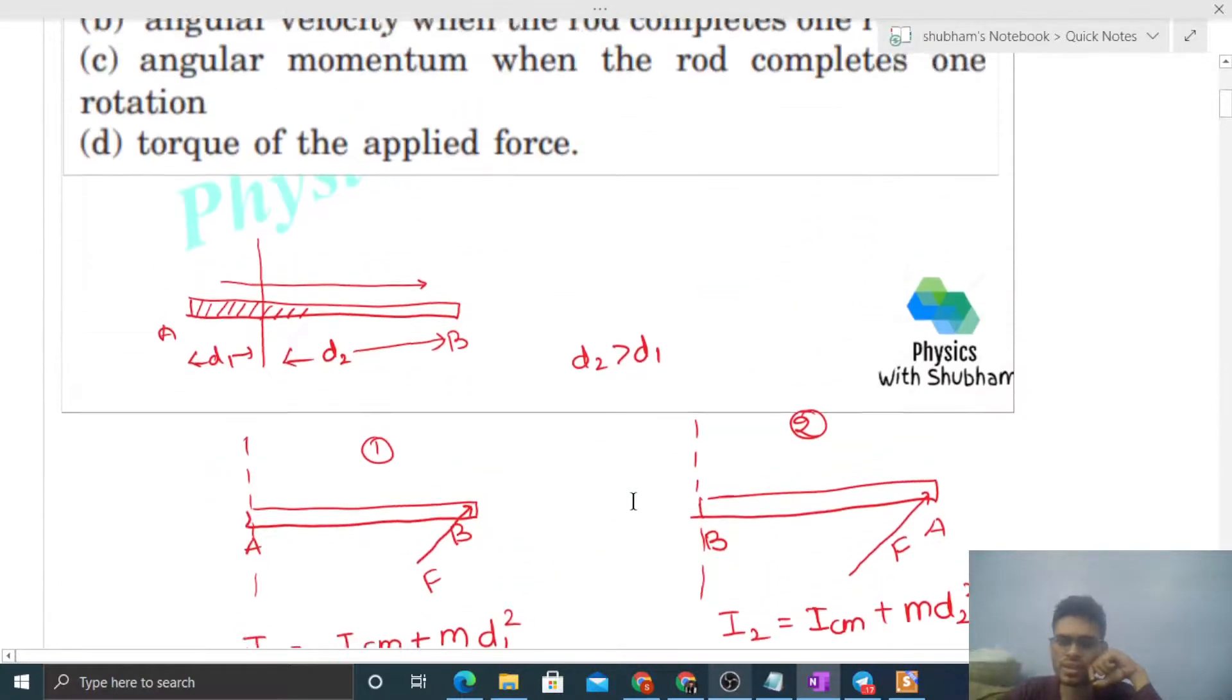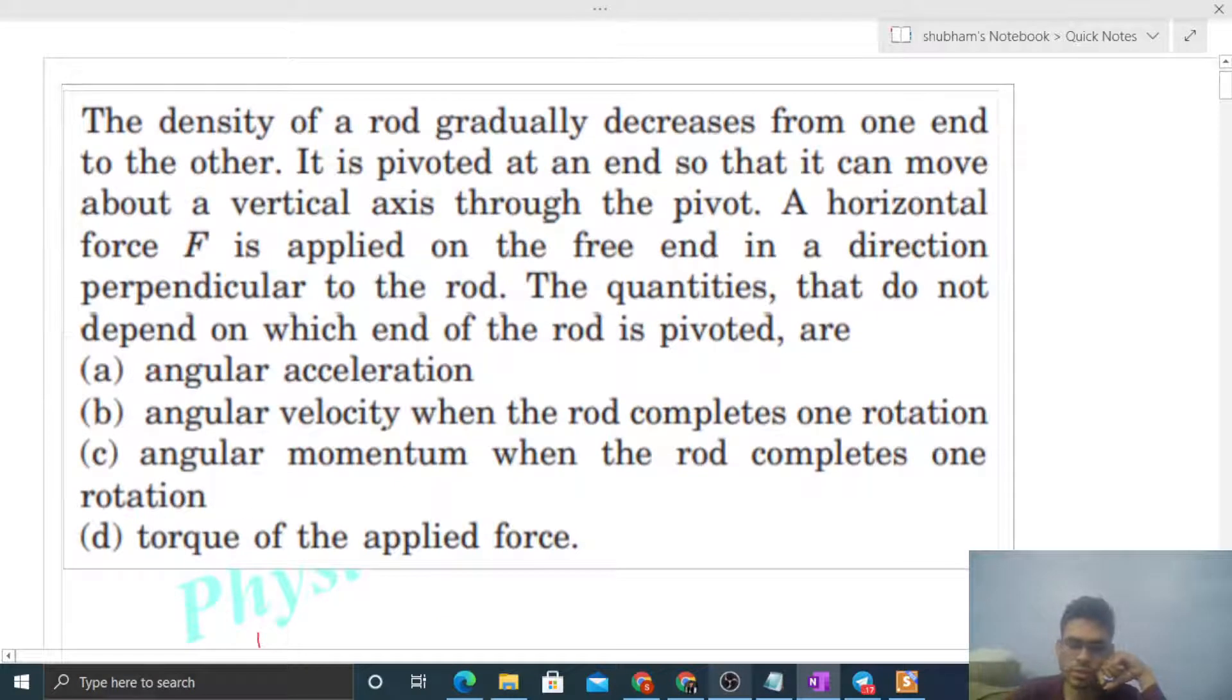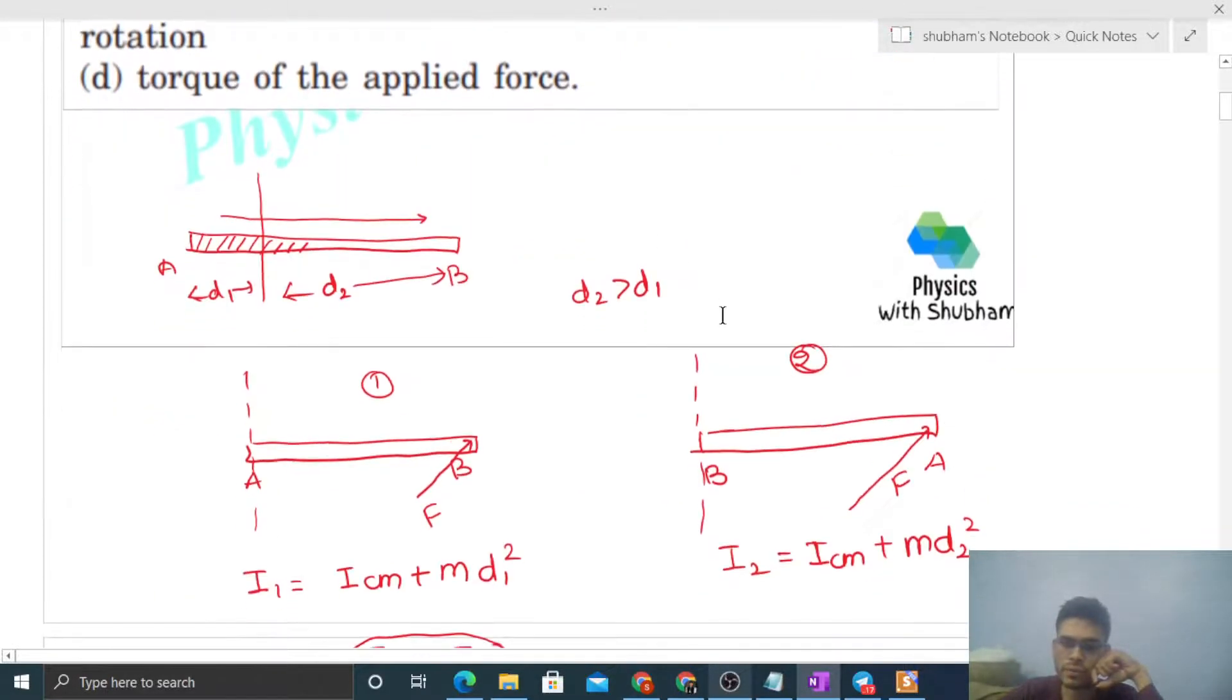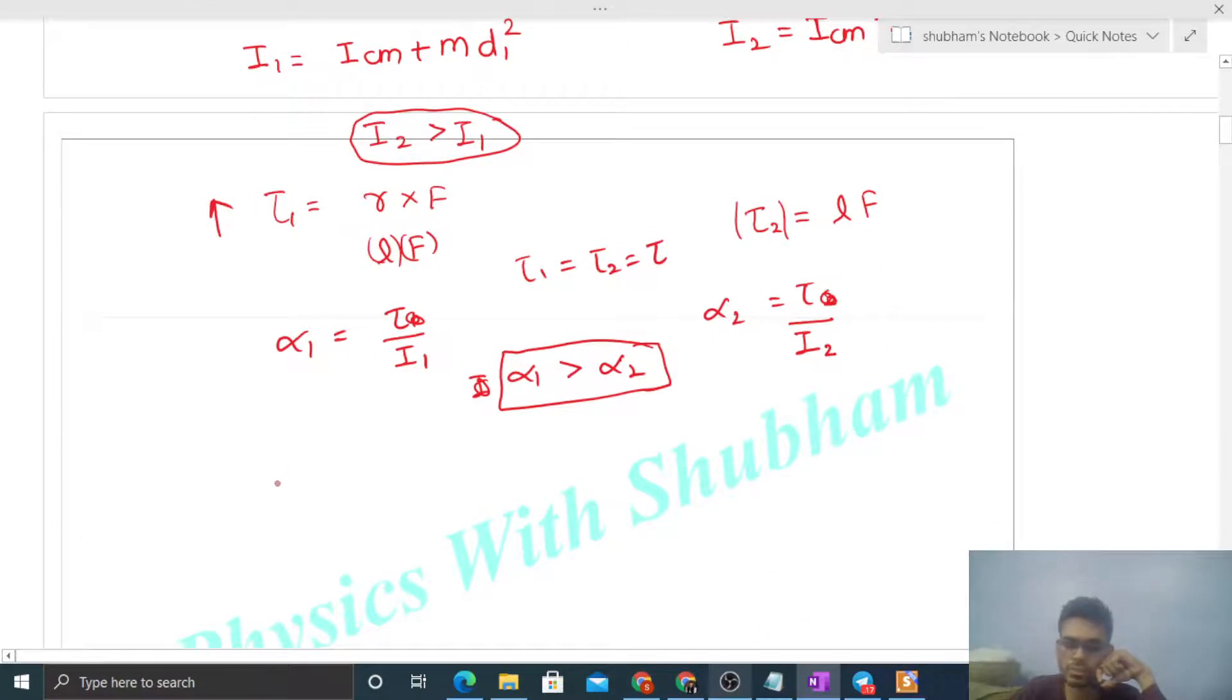Let's check the options. Angular acceleration is not the same. For angular velocity when the rod completes one revolution, we use rotational kinematics. Just like in linear kinematics v² - u² = 2as, we have ω² - ω₀² = 2αθ. Initial angular velocity is zero. After one revolution, theta is 2π.